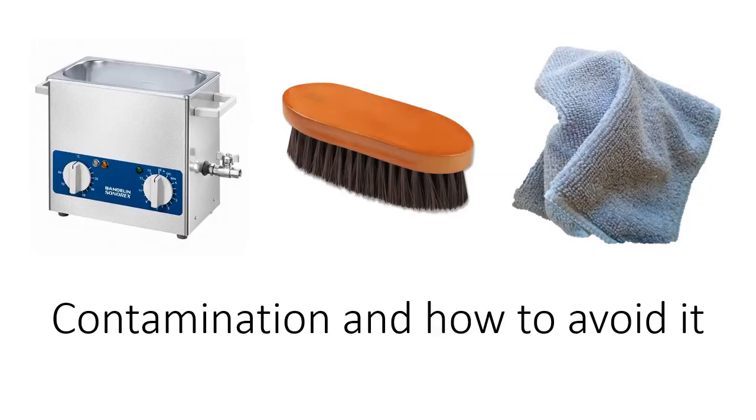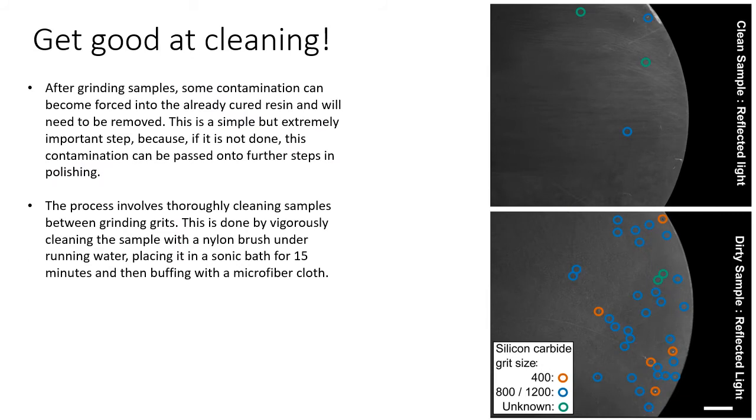We're now going to talk about contamination and how to avoid it. The easiest way to avoid contamination is to get good at cleaning. You very thoroughly need to clean your samples between each grinding and polishing stage to make sure that contamination doesn't travel through. As you can see here between the lower image and the top image, contamination can very easily move through the grits if not cleaned properly.